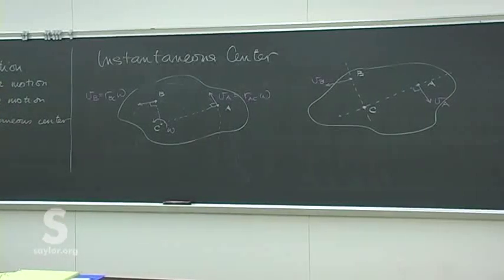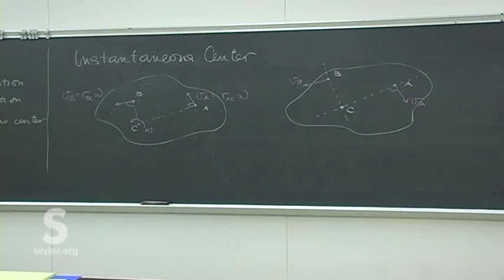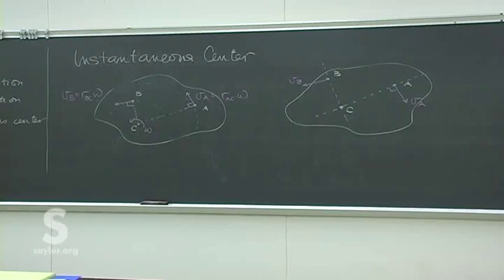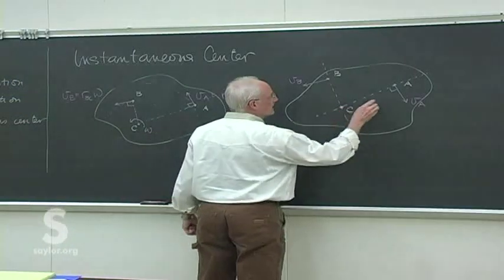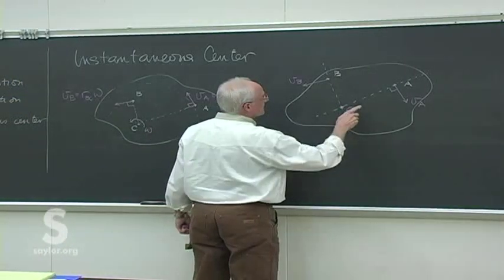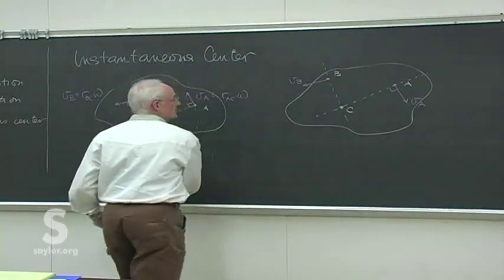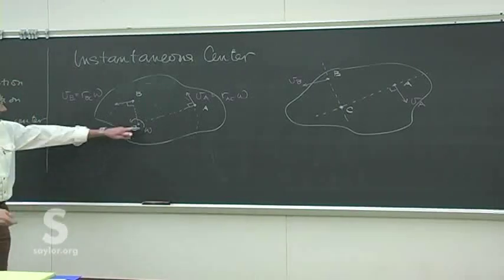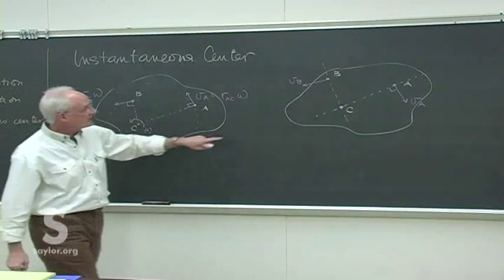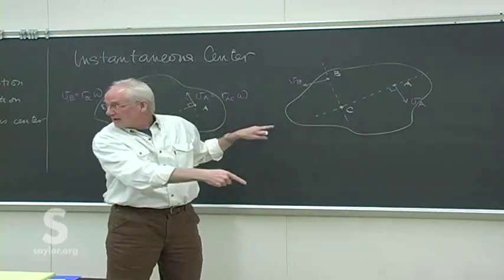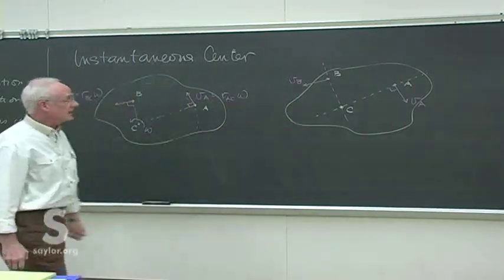An instant later, that object will not only have rotated somewhere else, it will have moved somewhere else, because we're looking at general motion, and there will be another instantaneous center somewhere else. But for this instant in time, that's where the center is located. We can then use the magnitudes. The two velocities I drew — because it's supposed to be as if they're both rotating around it — but the two directions I picked are going opposite ways, so I don't know how a rigid body is going to do that.